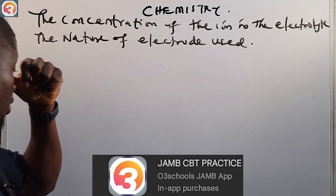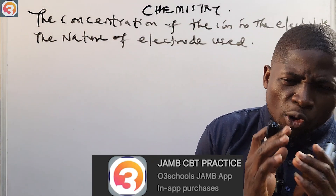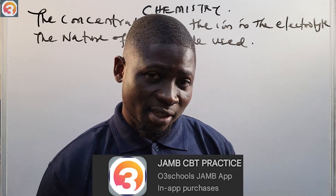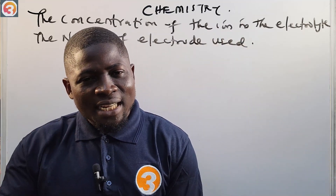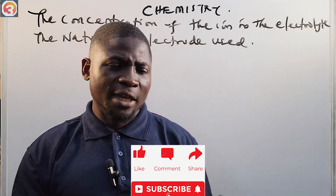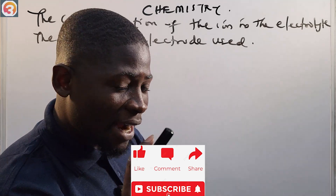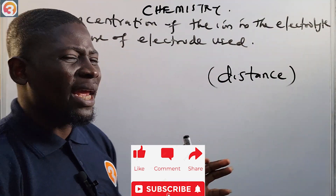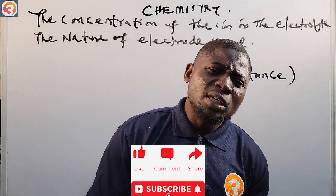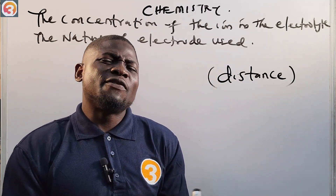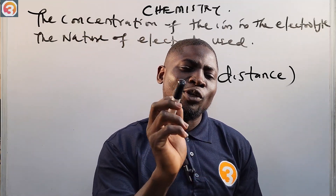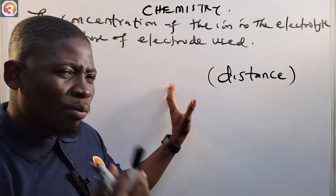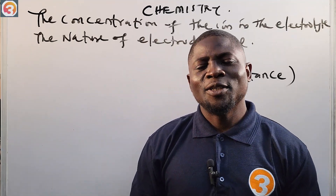The more concentrated an ion is in solution, the more likely it is to be discharged. However, the issue of concentration is known to die away with distance. This means that if the distance between the ions in the electrochemical series is fairly large, then the issue of concentration will not affect the discharge. But if the distance is not large, then the more concentrated anion will be discharged.